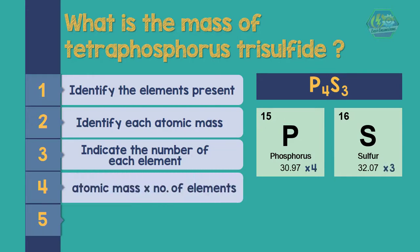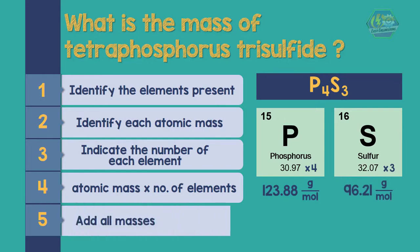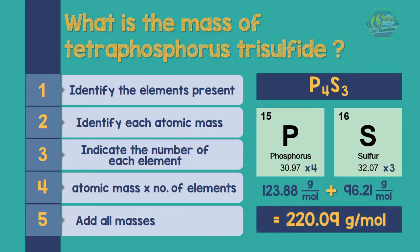There are 4 atoms of phosphorus and 3 atoms of sulfur. For phosphorus: 30.97 g/mol × 4 = 123.88 g/mol. For sulfur: 32.07 g/mol × 3 = 96.21 g/mol. Adding all masses, the molecular mass is equal to 220.09 g/mol.